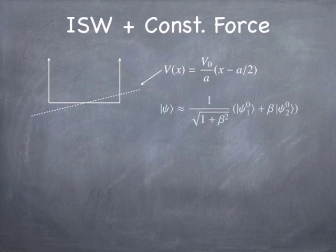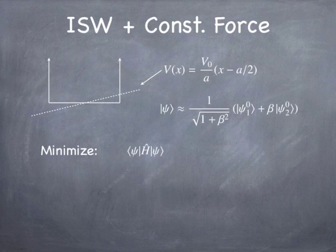What I want you to do now is attack the same problem as a variational method problem. The idea is you think of the wave function as mostly the ground state plus a little tiny bit of the first excited state. You can think of it as a variational method by computing the expectation value of the Hamiltonian and minimizing it with respect to variation in the parameter beta.